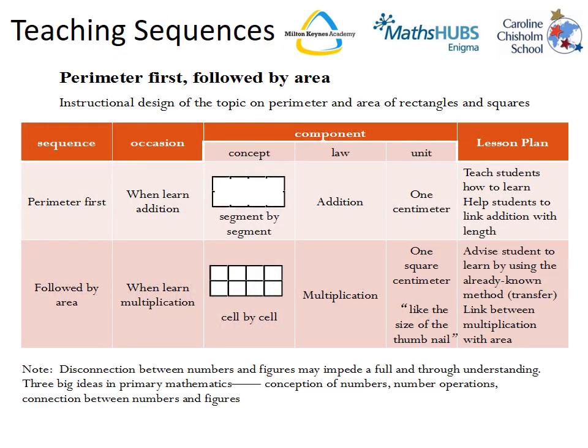In Shanghai, teaching sequences are really important. When we look at rectangles, we usually do area and perimeter together. Doesn't it make much more sense to look at the key skill here and the key concept of addition and then teach perimeter with addition, and then look at area when you look at multiplication? Many UK schools have tried this approach and found it very successful.